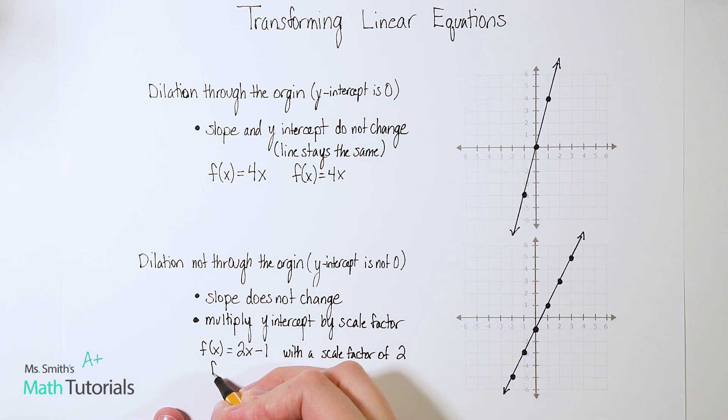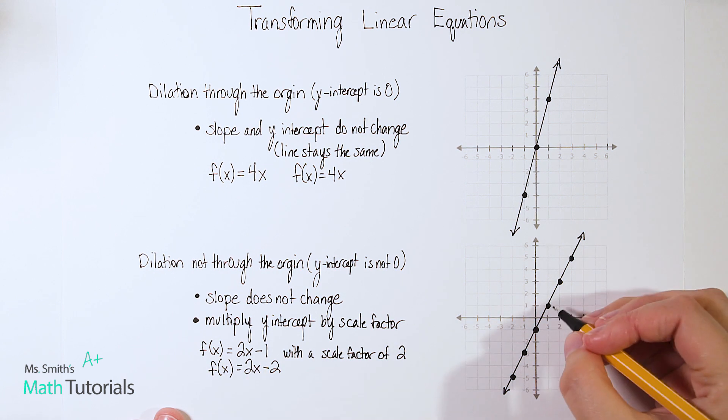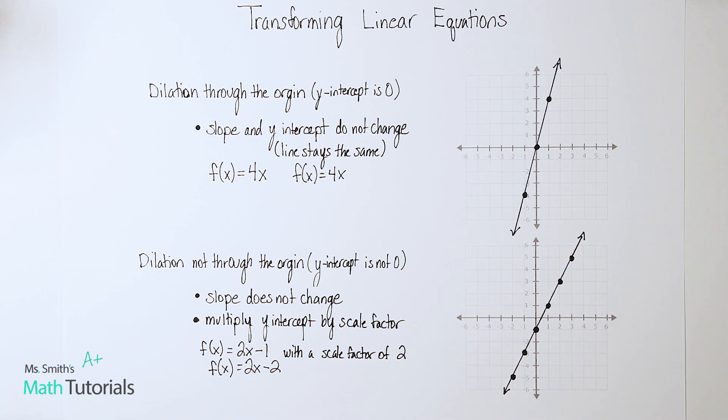So here we get for my new one, f of x, my slope does not change. So the 2x just comes down. All right, but I'm going to multiply this b-value, the y-intercept, by the scale factor of 2. So what is negative 1 times 2? Negative 2. So this is my new transformed equation when I do a dilation of 2. And let me plot that one just so we can see how it would look different. And I'm going to use a different color.